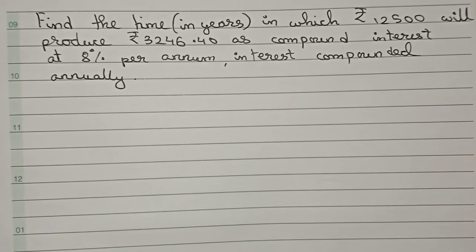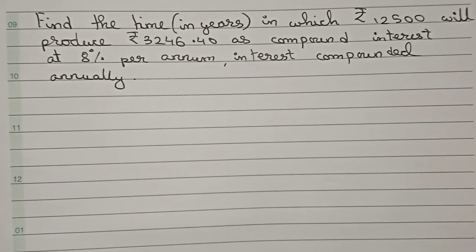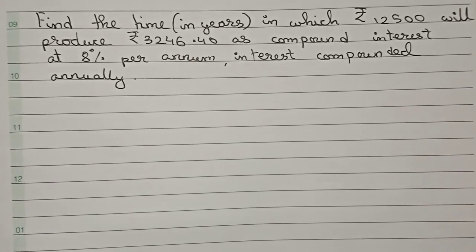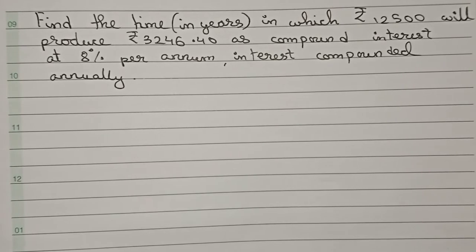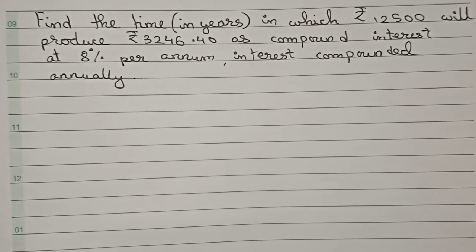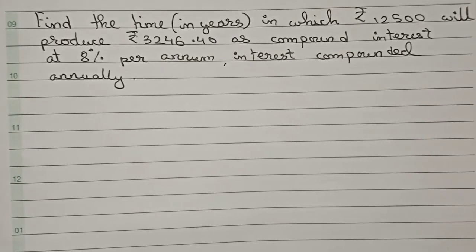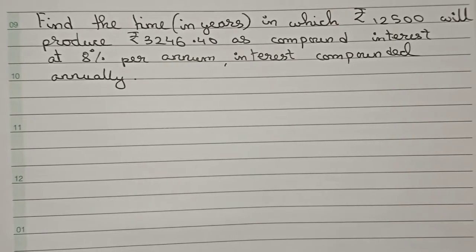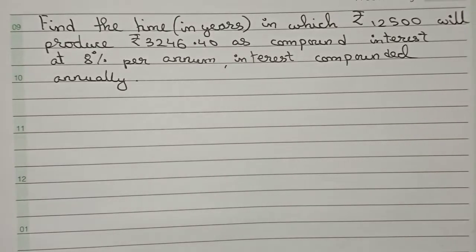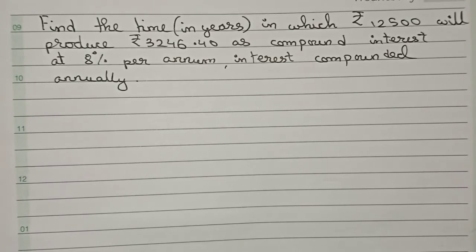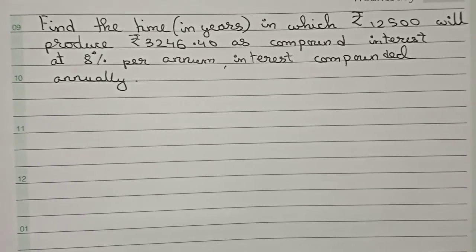Hello guys, welcome to this video. In this video, the question is: in what time in years will rupees 12500 produce 3456.40 rupees as compound interest at 8% per annum, compounded annually? So this is the question.